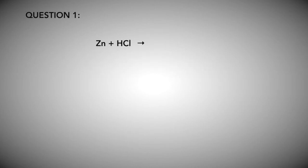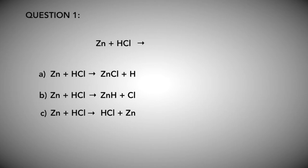Zn plus HCl gives you A. ZnCl plus H, B. ZnH plus Cl, C. HCl plus Zn.